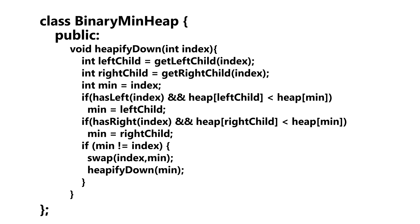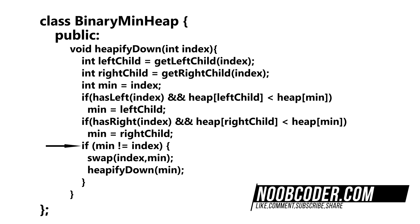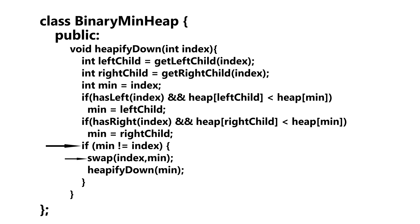The heapify down method is passed an index — the first time it executes, it always starts at index zero, which is our root index. We get the index of the left and right child nodes, then set the minimum index equal to the passed-in index. We check if the node has a left child and if it is less than our current min; if true, we set the min to the left child index. Likewise for the right child — if it exists and is smaller than the current min, we set the minimum index to the right child index. If the minimum index does not equal the passed-in index, we swap the parent and child node data and recursively call heapify down until our tree is fully heapified.